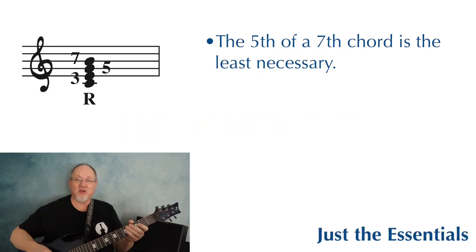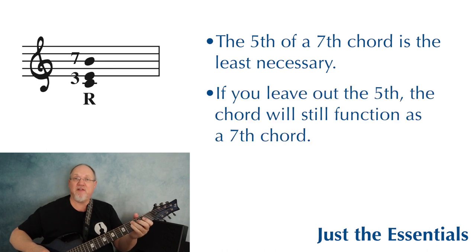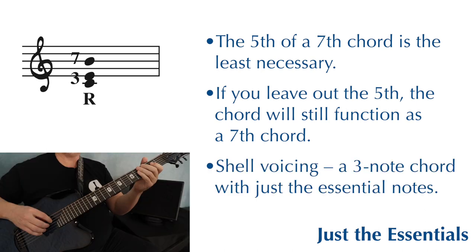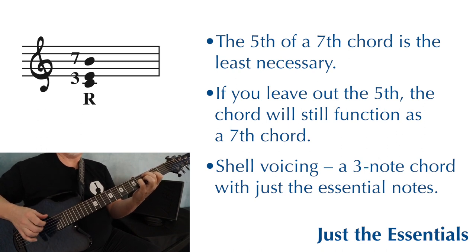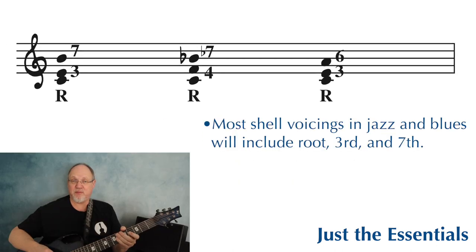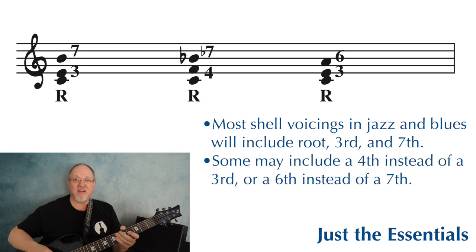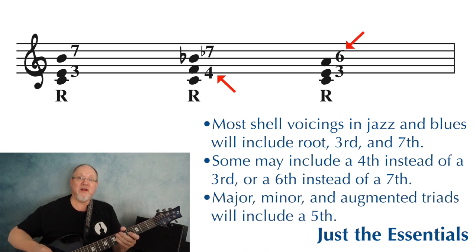Of all the notes in a seventh chord, the fifth is the least necessary. We can remove the fifth and the chord still has its most essential notes. What we're left with is a shell voicing — the root, third, and seventh. Most shell voicings have a root, third, and seventh, but you might also see a fourth instead of a third, a sixth instead of a seventh, or some chords that include a fifth.